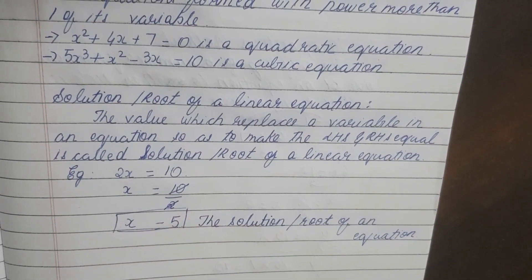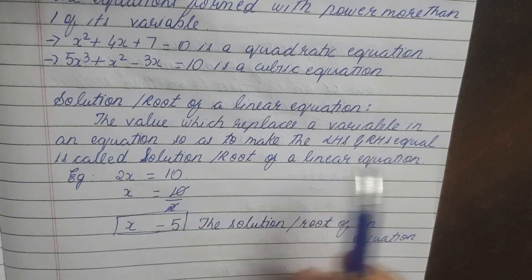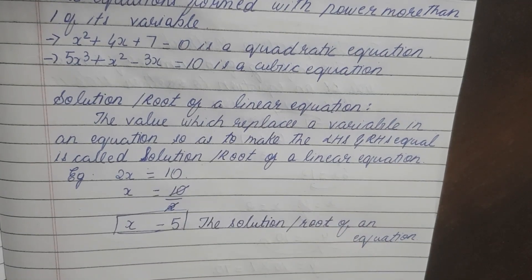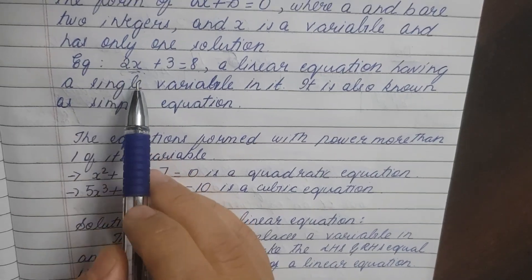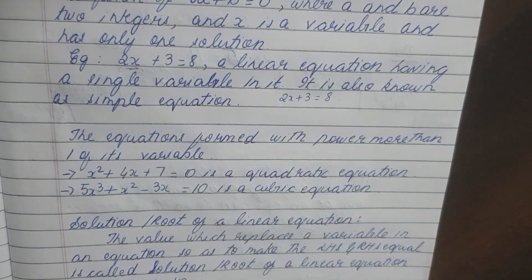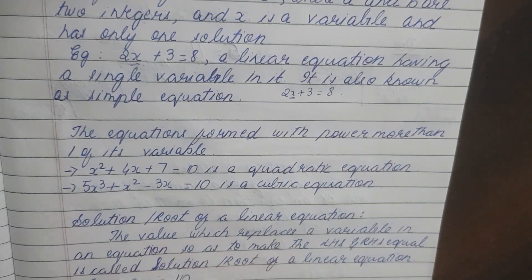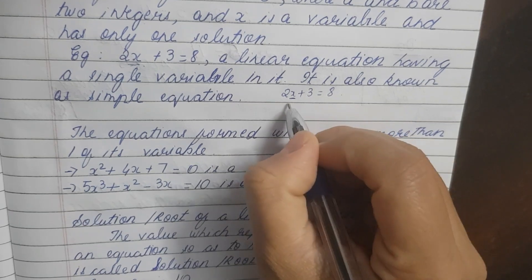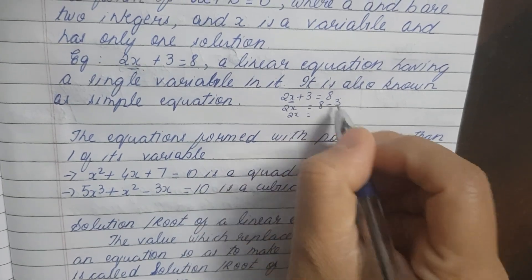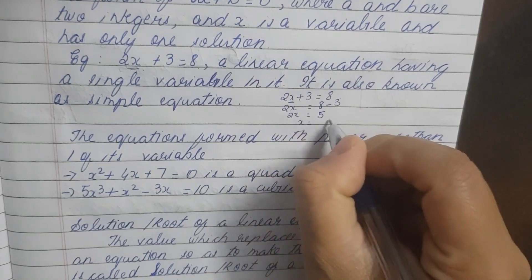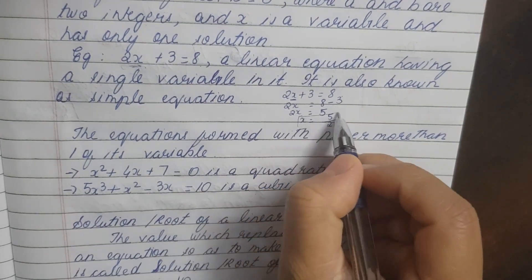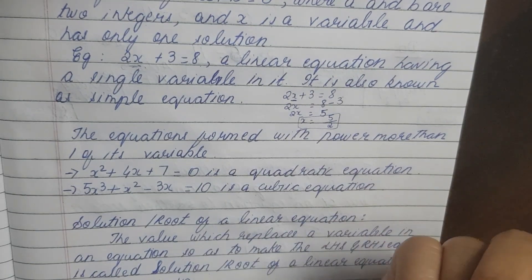Next, solution or root of a linear equation. The value which replaces a variable in an equation so as to make the left hand side and right hand side equal is called the solution or root of a linear equation. For example, take 2x plus 3 is equal to 8. The root or solution means finding the value of the variable x. Solving it: 2x equals 8 minus 3, which is 5. So x equals 5 divided by 2. That value of x is what we call the root or solution of a linear equation.